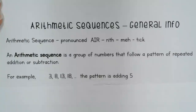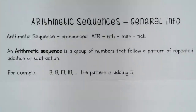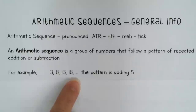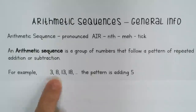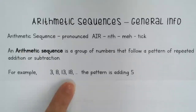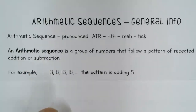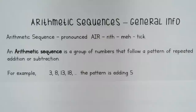For example, the numbers 3, 8, 13, 18... this is an arithmetic sequence. I know that because the pattern happening between each number is that I'm adding five. So that fits our definition — this would be an arithmetic sequence.